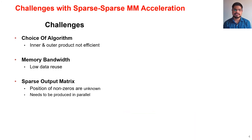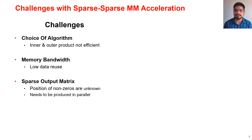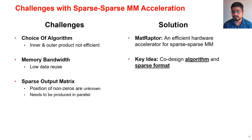Let's look at the key challenges in accelerating sparse-sparse MM. The first is the choice of algorithm — commonly used inner and outer product approaches tend to be inefficient, requiring a rethinking of the algorithm. The second is memory bandwidth utilization: due to low data reuse in sparse-sparse MM, memory accesses must be structured to achieve high bandwidth utilization. Lastly, the sparse output matrix format is challenging because different processing elements (PEs) produce output in parallel and the number and positions of non-zeros are not known ahead of time, requiring a mechanism so PEs can work independently without waiting for each other.